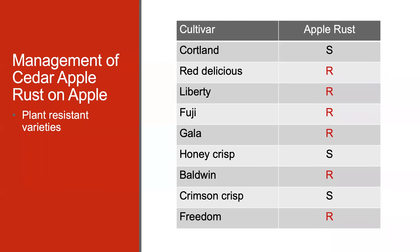Looking at management: because there are two hosts, disease management must be implemented for both hosts to have successful control. As with all early season apple diseases, host resistance should be the first line of defense. For cedar apple rust, there are many apple varieties with resistance, making it easier for growers to select a cultivar compared to other diseases such as powdery mildew or fire blight. This chart shows that Fuji and Gala, which are popular varieties, have resistance.